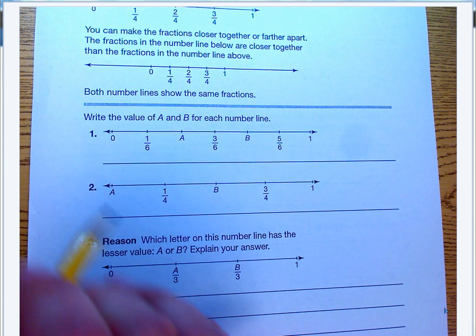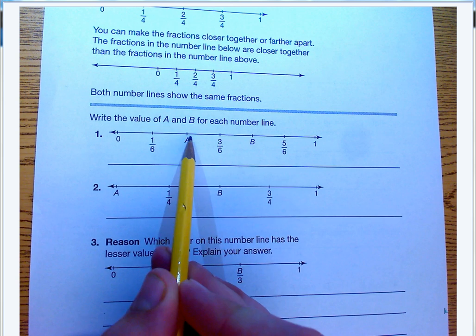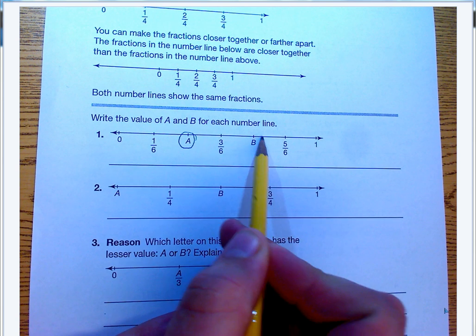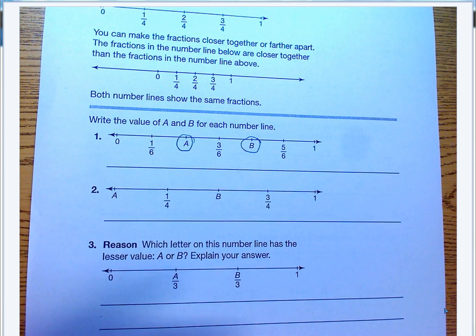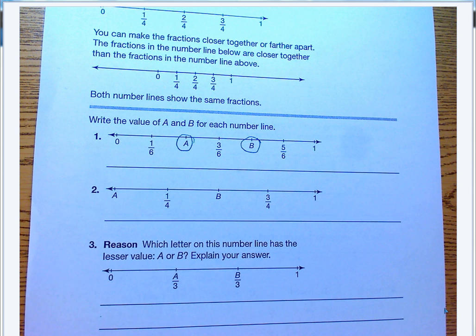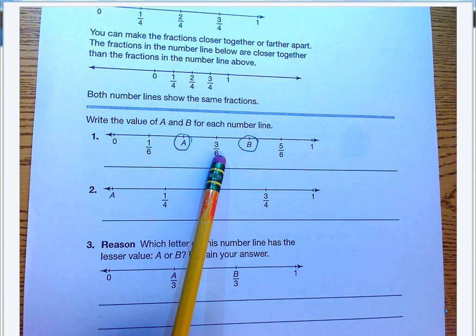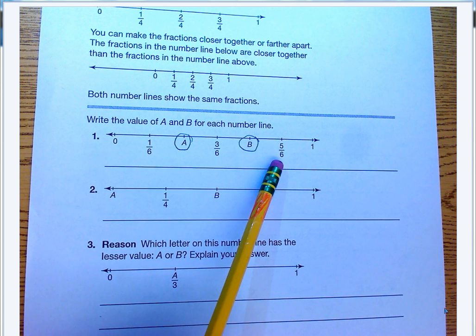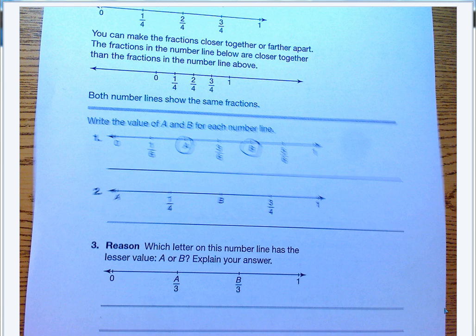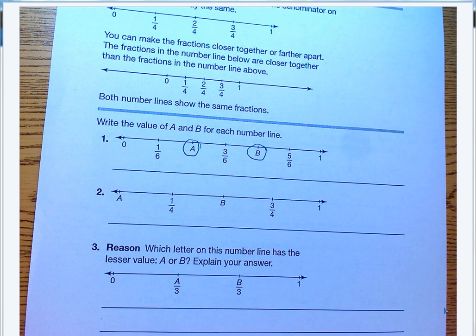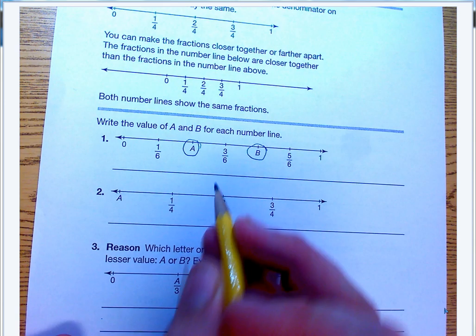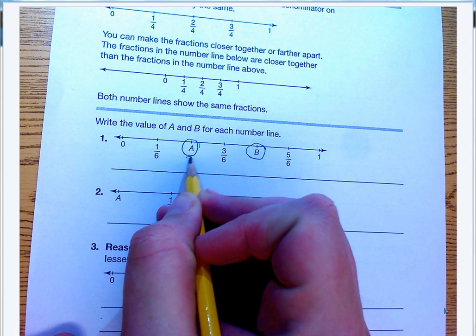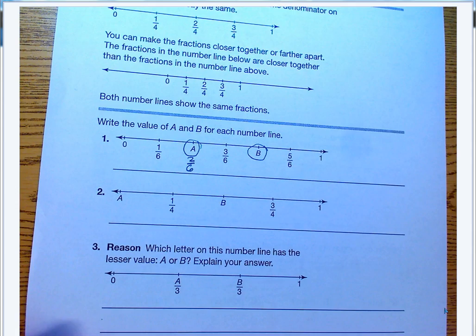Good job, class. So if we take a look, it's asking you what is the value of A and what is the value of B. Who can raise their hand and tell me what is the value of A on this number line? Notice we have one-sixth something, three-sixth something, then five-sixths. If you can count by ones, then hopefully you can get this one right. How about you, Hayden? Talk nice and loud for me. A is two-sixths. Two-sixths, that sounds good to me, Hayden. I'm going to write two-sixths. Good job.